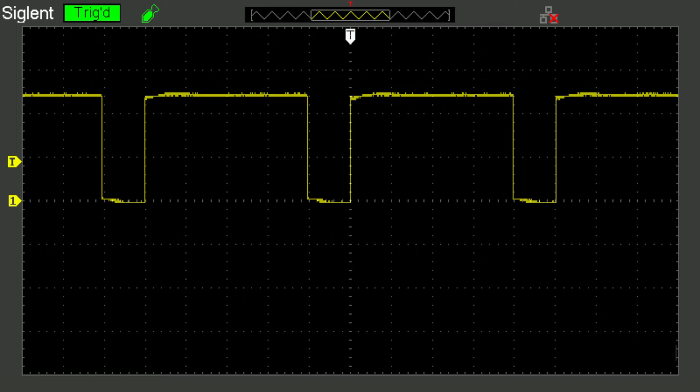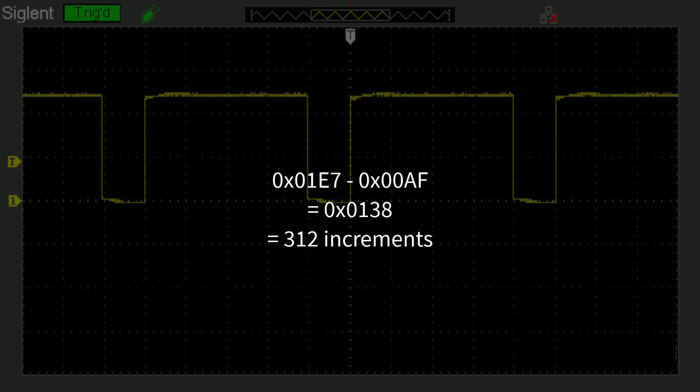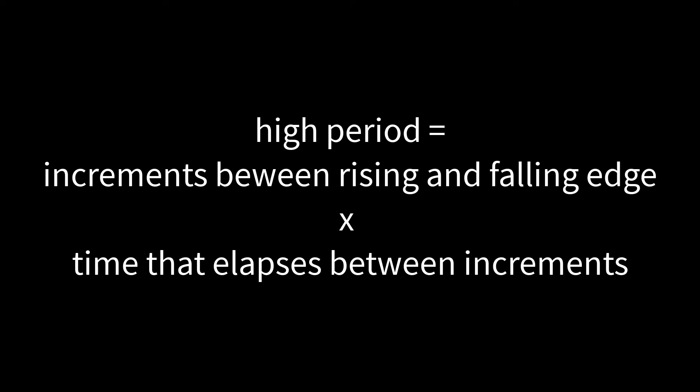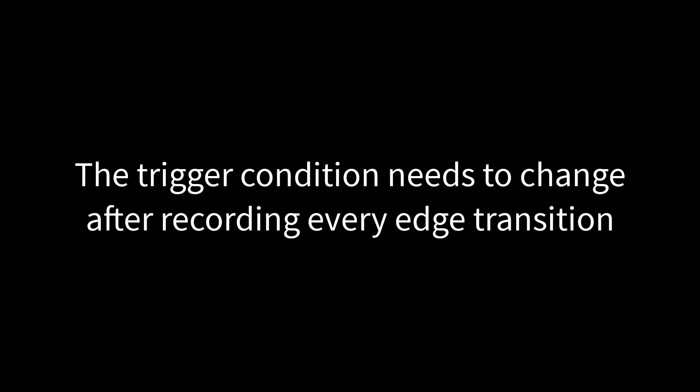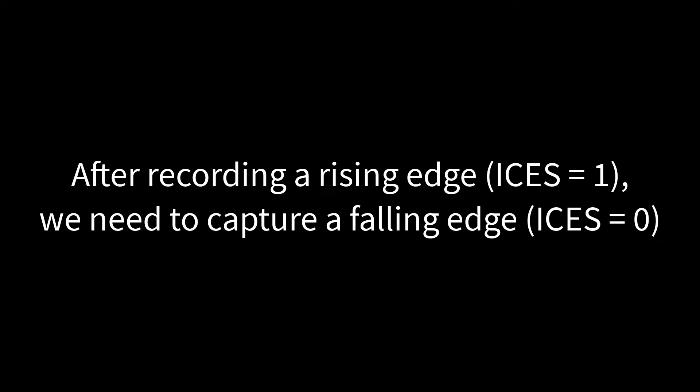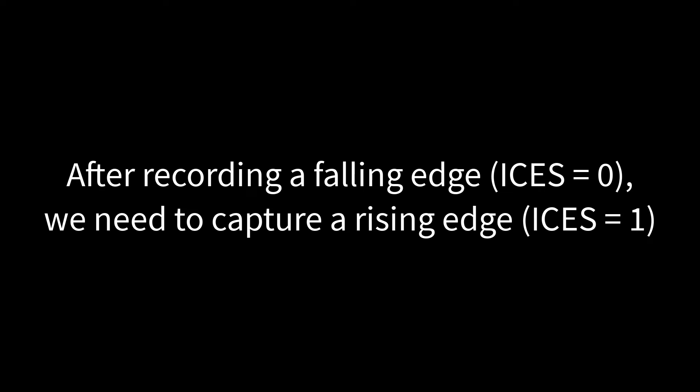Next, we can calculate the high period of a square wave. This relates to the amount of time that elapses between a rising edge and a subsequent falling edge. That is, we need to take the value recorded by the input capture unit when a rising edge occurs and subtract this from the value recorded when a subsequent falling edge occurs. The number of increments equals falling edge time minus rising edge time. Then, we multiply that by the amount of time per increment to determine the high period. This is more complicated because the trigger condition has to change every time we record an edge. After we record a rising edge with ICES equal to 1, we then need to record a falling edge with ICES equal to 0 and then keep toggling between these two conditions.